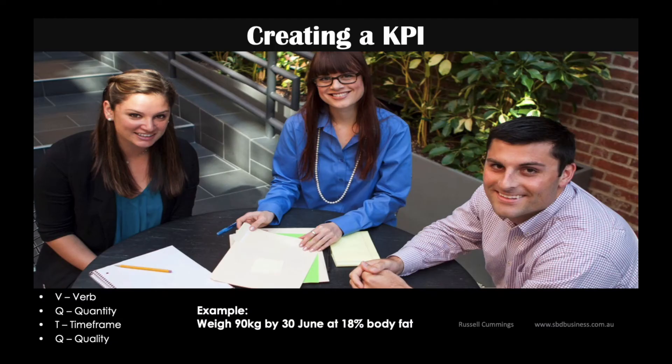If we want to convert them into a KPI, we simply use this VQTQ framework. V stands for verb, quantity, time frame, and quality. So an example is: I would want to weigh 90 kilos by the 30th of June at 18% body fat. The verb is 'weigh,' the quantity is 90 kilograms, the time frame is 30 June, and the quality measure is 18% body fat. We can take the existing framework and convert it into a nice KPI statement, and what I'd like to see at the end of this is some KPIs or measurable things we can actually get a handle on.